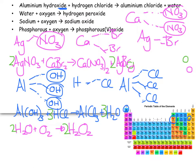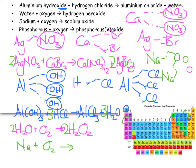Sodium Na plus oxygen O₂ (diatomic) gives sodium oxide. Sodium has valency 1 (group 1), oxide has valency 2 (group 6, 8 minus 6), so Na₂O. Balancing: 1 sodium on the left, 2 on the right — put a 4 in front of Na, and a 2 in front of Na₂O. Now 4 sodiums each side and 2 oxygens each side. Balanced.